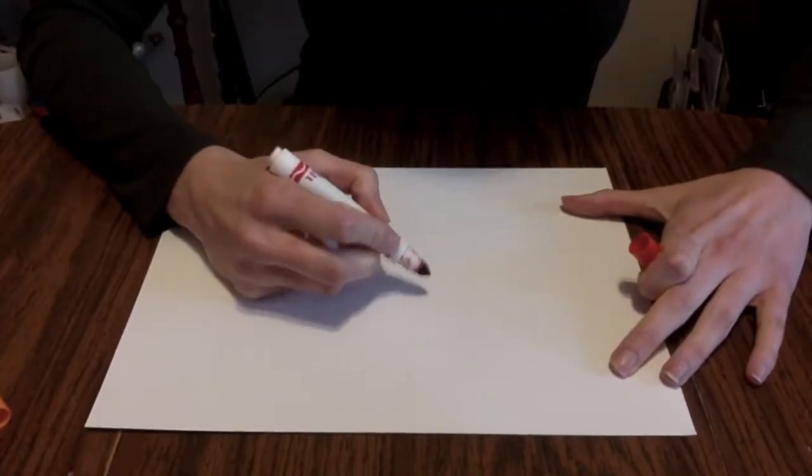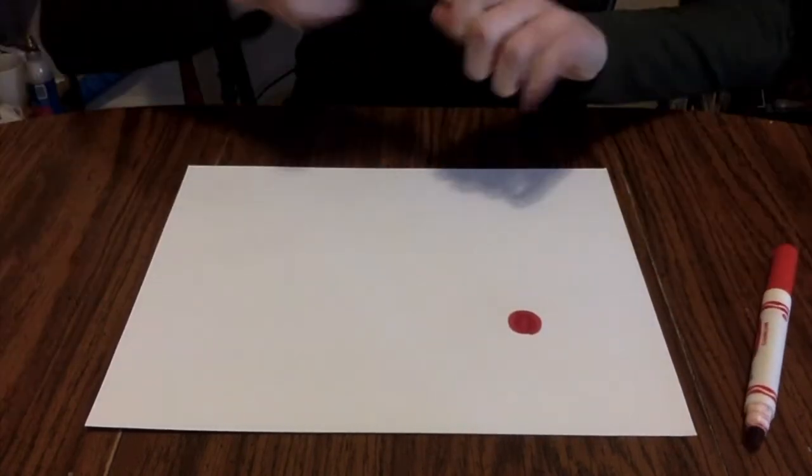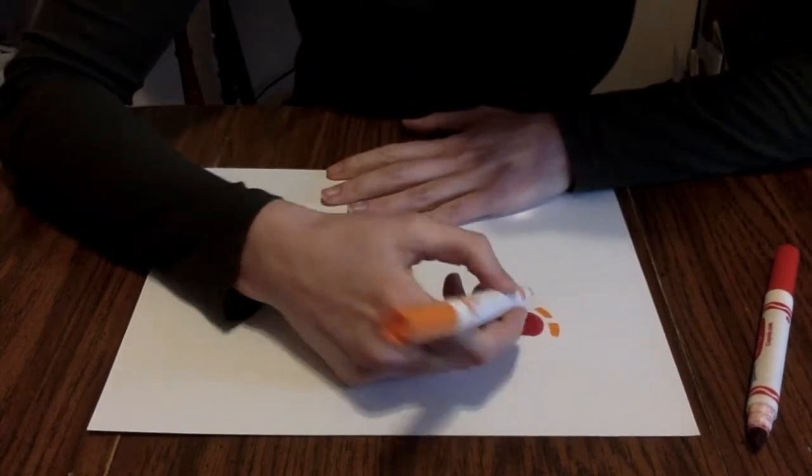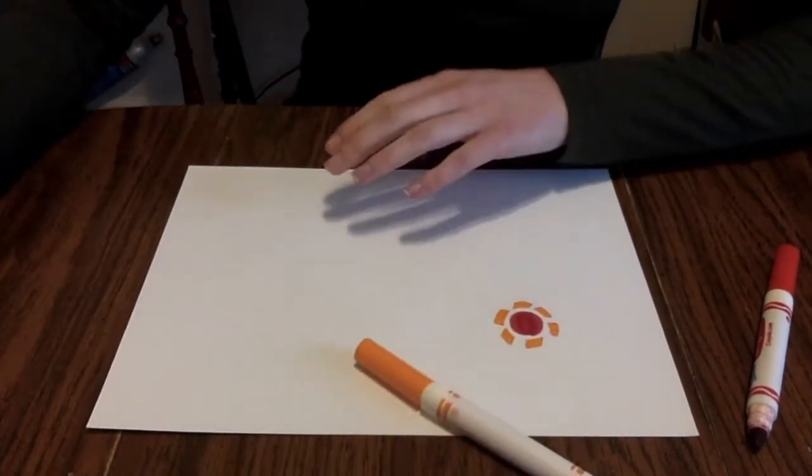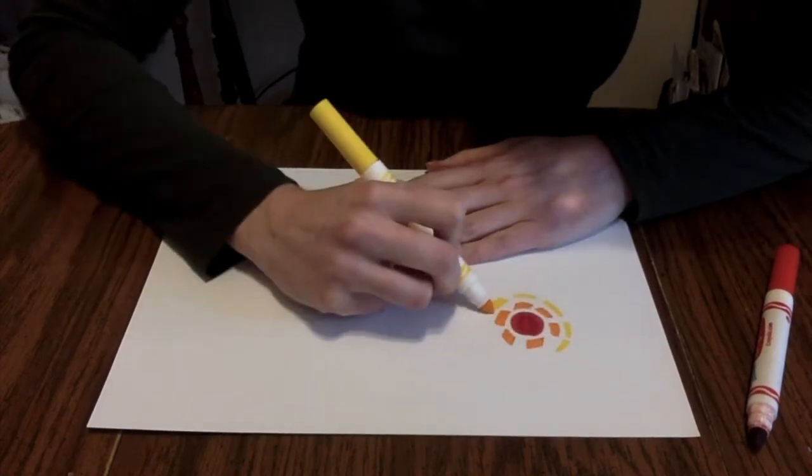Feel free to use colored paper, crayons, paint, or anything else you have. You can start with a circle anywhere on your page. The colors you use are your choice. I am going to draw a rainbow.